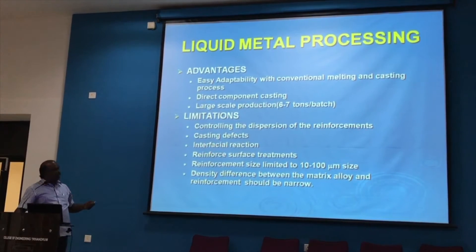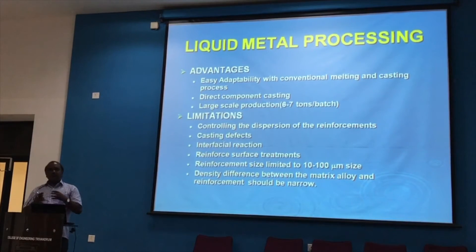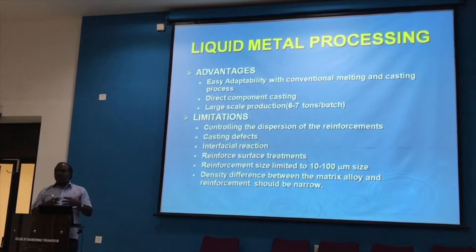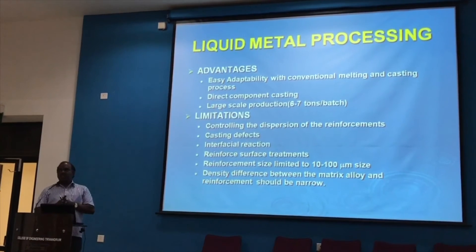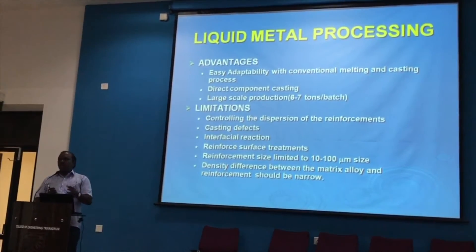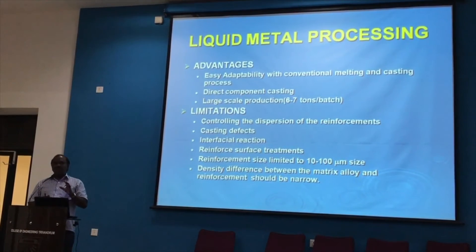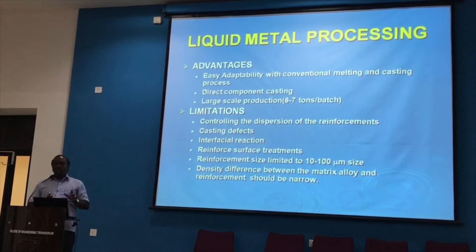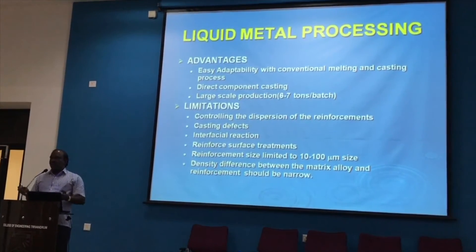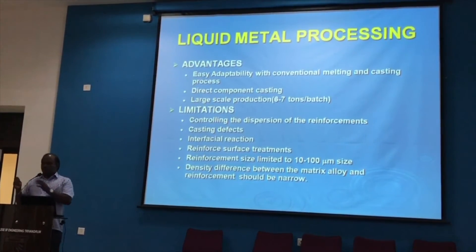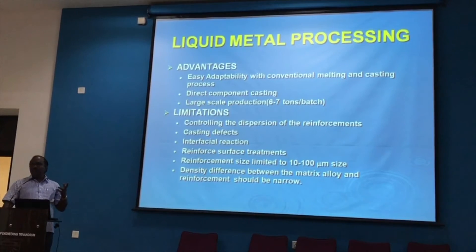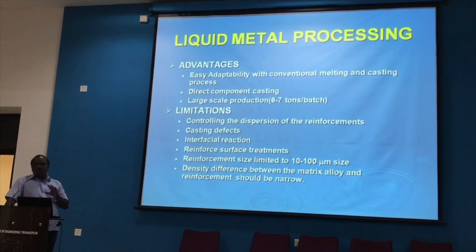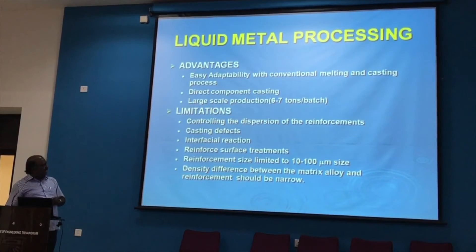Interfacial reaction is another major problem. The added particles must not react excessively with the liquid metal, as this forms detrimental interfacial products. For example, when silicon carbide (SiC) is added to aluminium, it can form aluminium carbide (Al4C3), which is hygroscopic. On exposure to air, it converts to alumina and methane — the methane creates cavities leading to corrosion problems. Proper temperature control is essential to prevent Al4C3 formation.